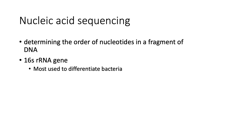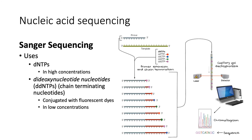Next, let's talk about nucleic acid sequencing. This works hand-in-hand with PCR, especially when using nonspecific primers. Here, we determine the order of nucleotides in a given fragment of DNA, which helps us identify or differentiate one bacterium from another. In microbiology, we usually use the 16S rRNA gene to differentiate bacteria. There are many nucleic acid sequencing technologies, but we will discuss just a few.